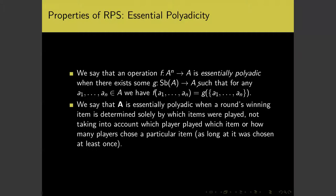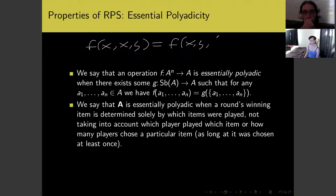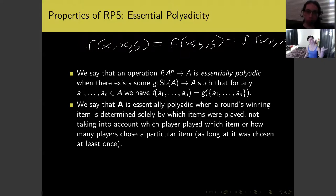Essential polyadicity is the condition that F(a₁, ..., aₙ) is determined just by the set of elements plugged in. So things like F(x, x, y) must equal F(x, y, y), which must equal F(x, y, x). This condenses conditions where we look only at the underlying set of things plugged in, not the order or how many of each there are. In game terms, this avoids having to keep counts of different things simultaneously — a form of convenience.